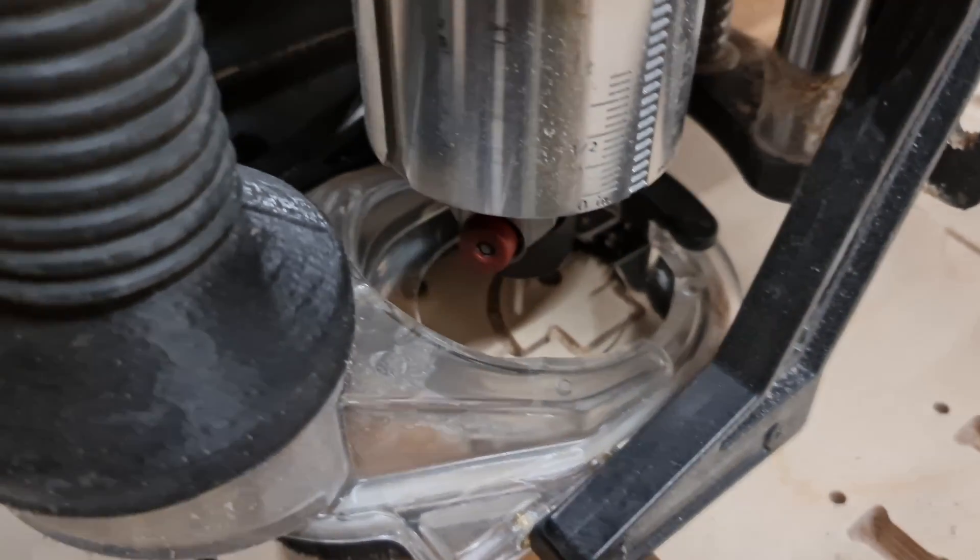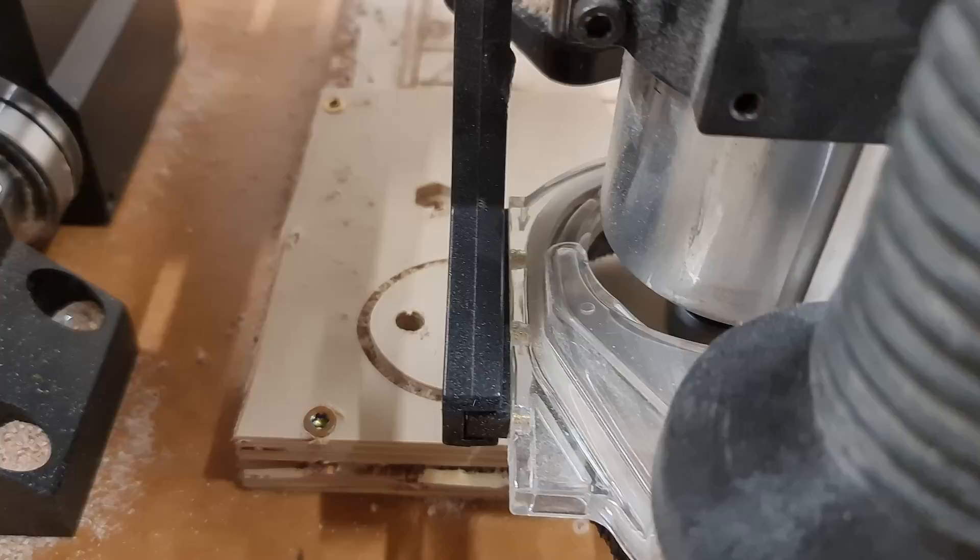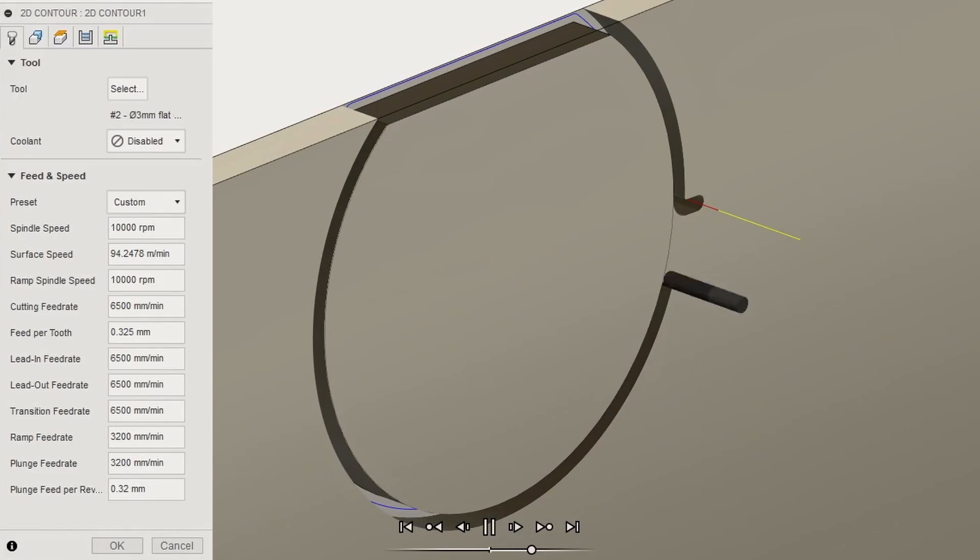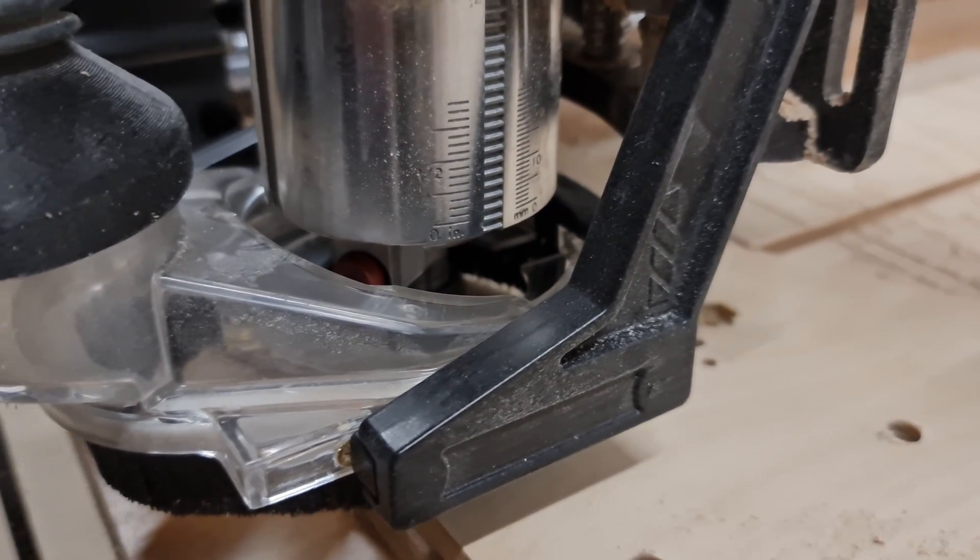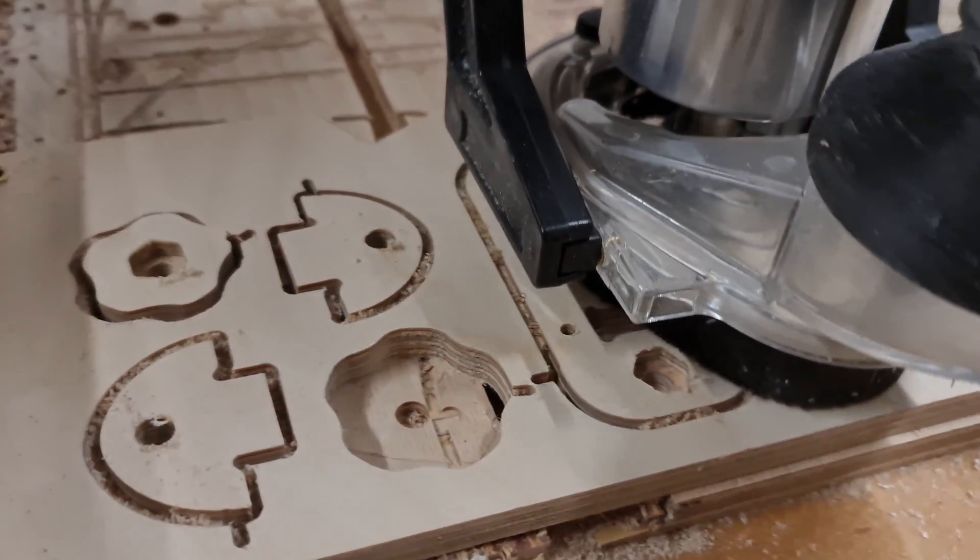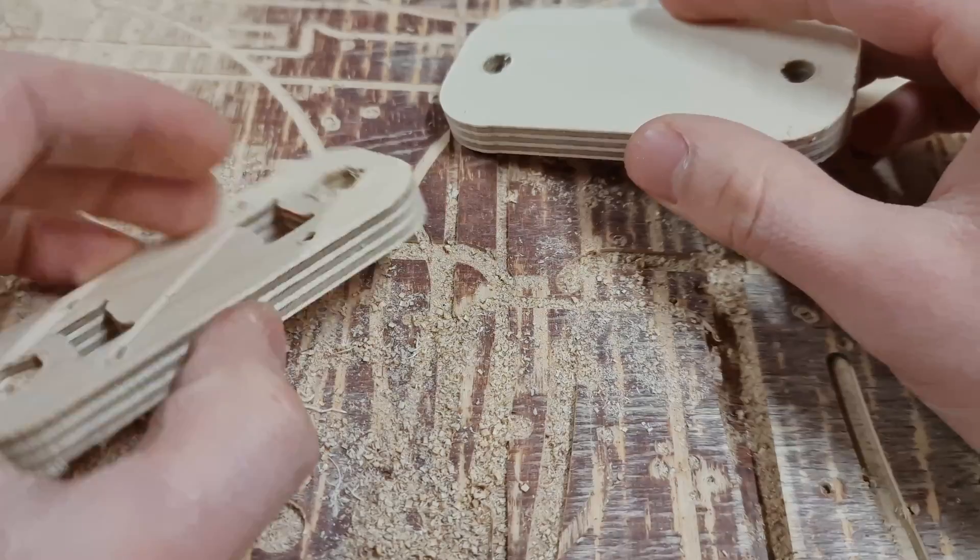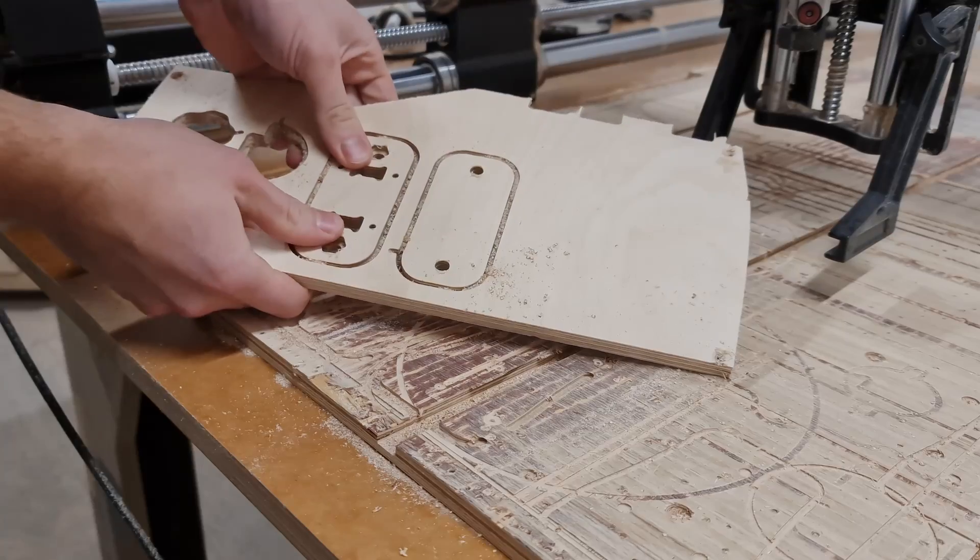For a while I've been wondering if I could make the contour cuts in one pass, cutting the whole material thickness without breaking the router bit. So this would be a great project to test it out. To my surprise the bit could withstand the abuse and made all the contour cuts without breaking. And the cut edges looked very nice.